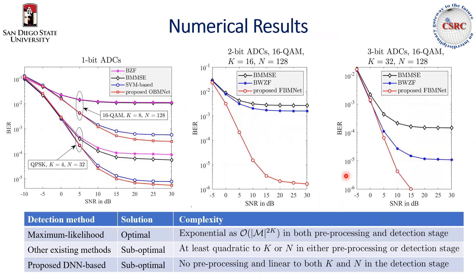Here I have some numerical results. First, I want to note that the solution given by the maximum likelihood method is optimal, but its complexity is exponential to the number of users, so it is very high. The solution given by the proposed DNN detector is suboptimal, but its complexity is just linear to both the number of users and the number of antennas at the base station. I also want to note that the proposed DNN performs better than existing suboptimal methods, as you can see in these numerical results.